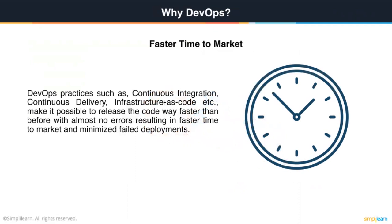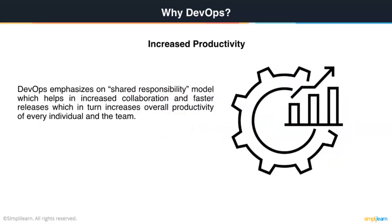Time to market is the concept where an idea goes through the process of designing, implementing, coding, and testing, and finally produces an end result for end users. That whole time taken is known as time to market, which becomes increasingly faster if you are implementing DevOps. Because of this combination of practices and cultural changes, you have a shared responsibility model, which helps in increased collaboration and faster releases, ultimately increasing overall productivity of every individual and the team.